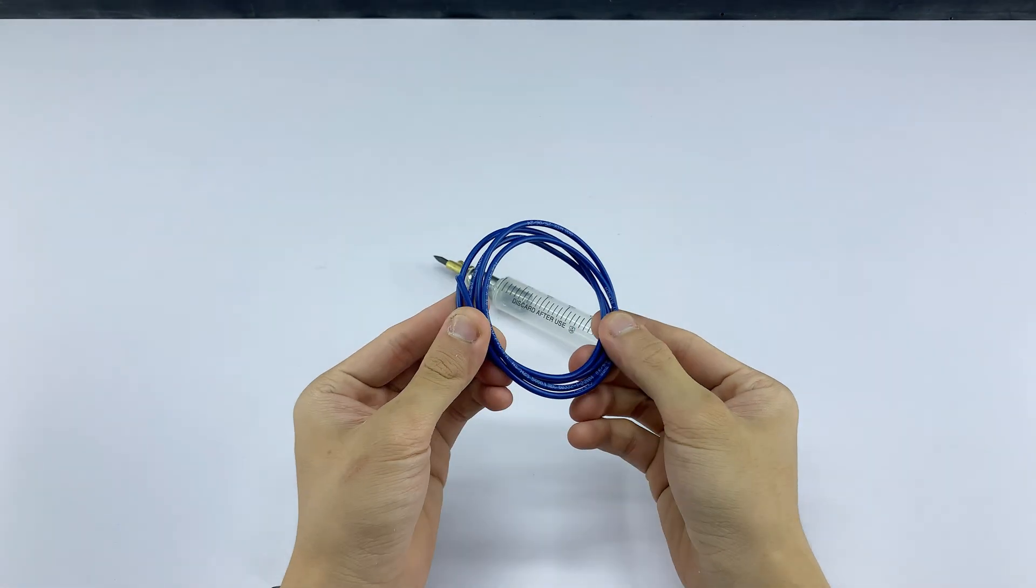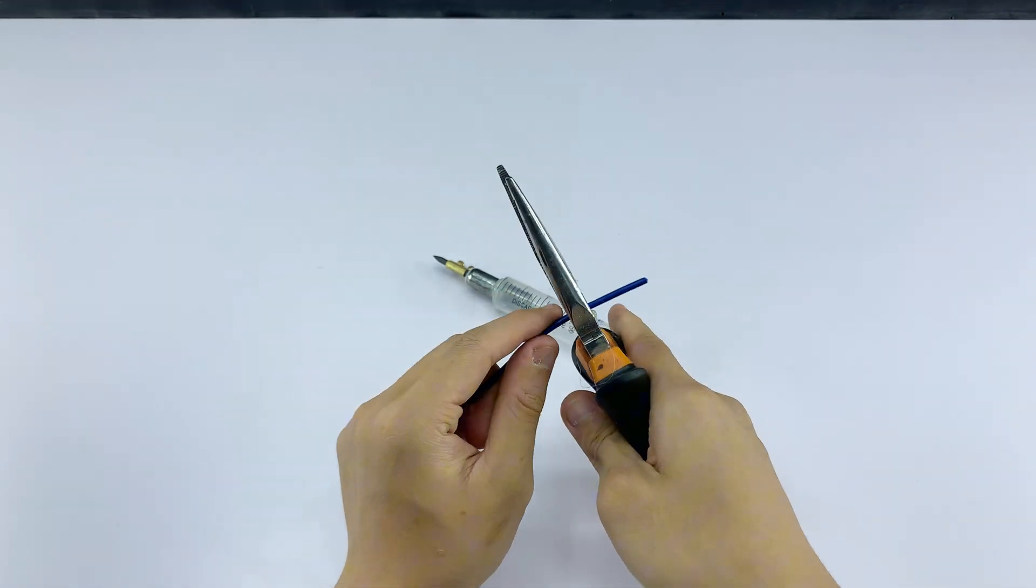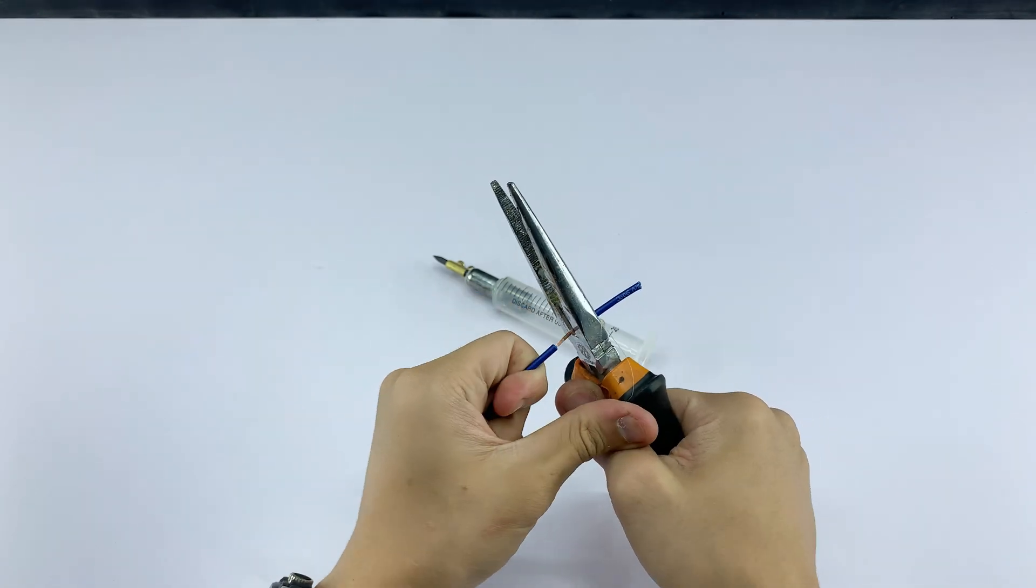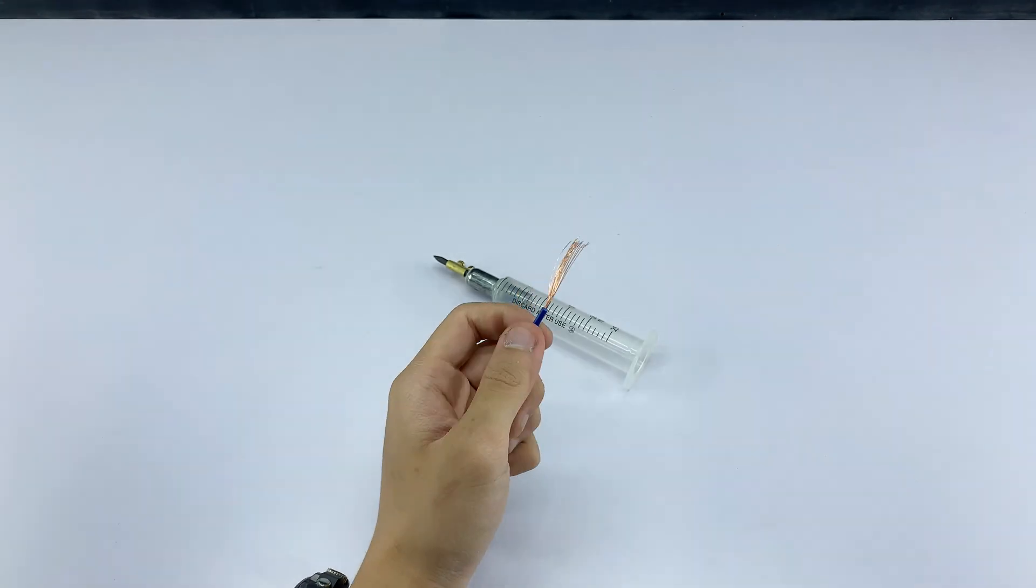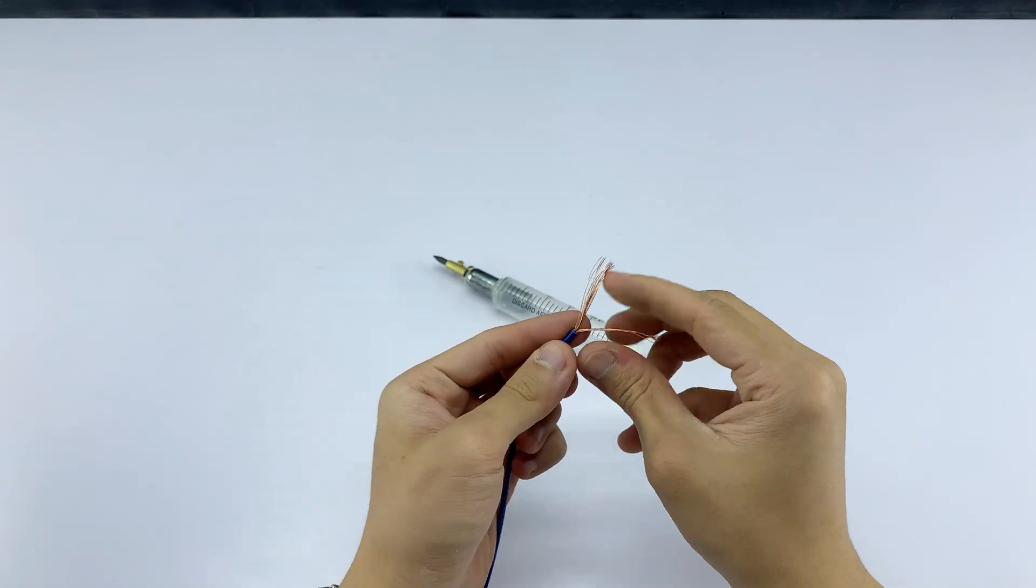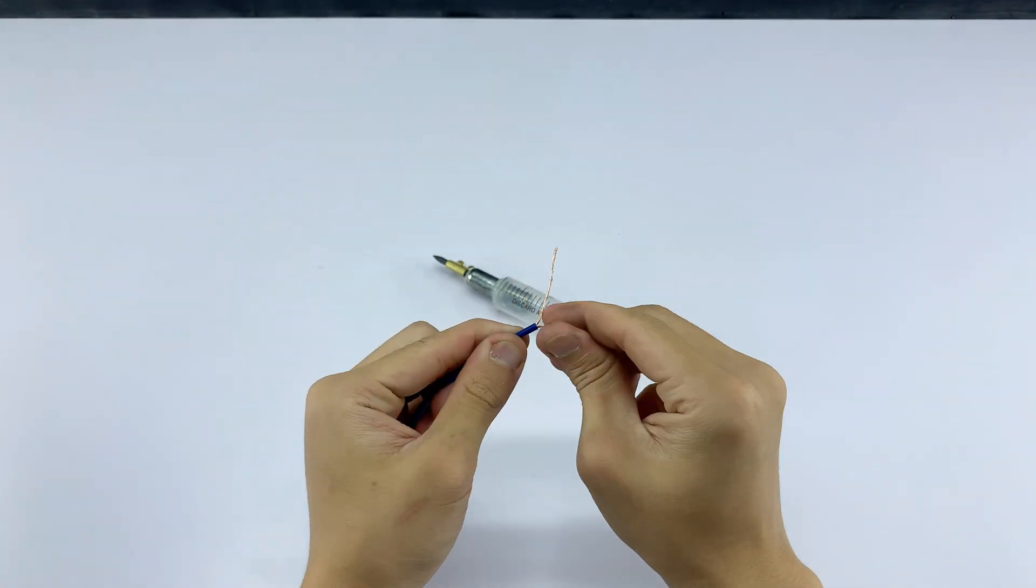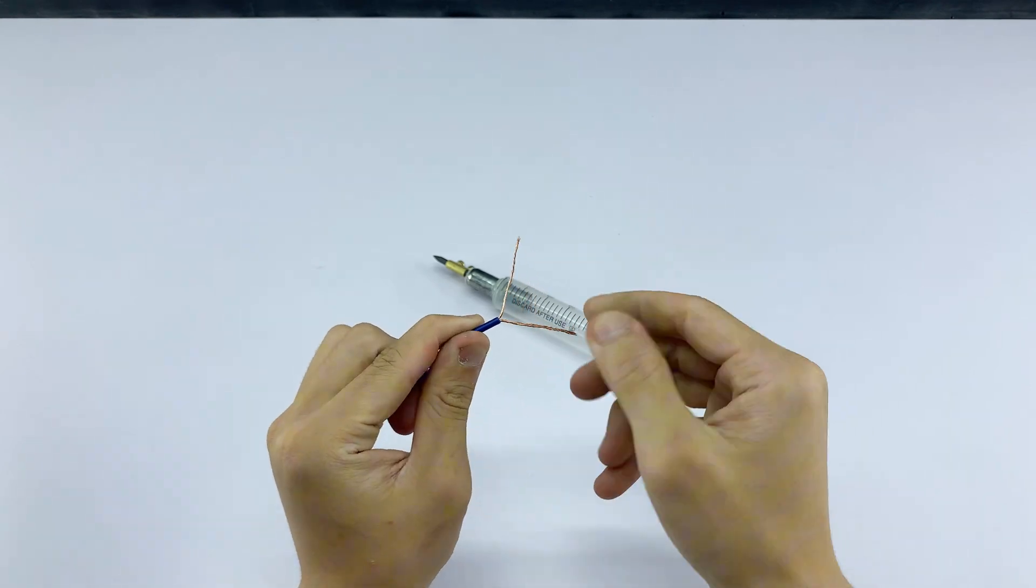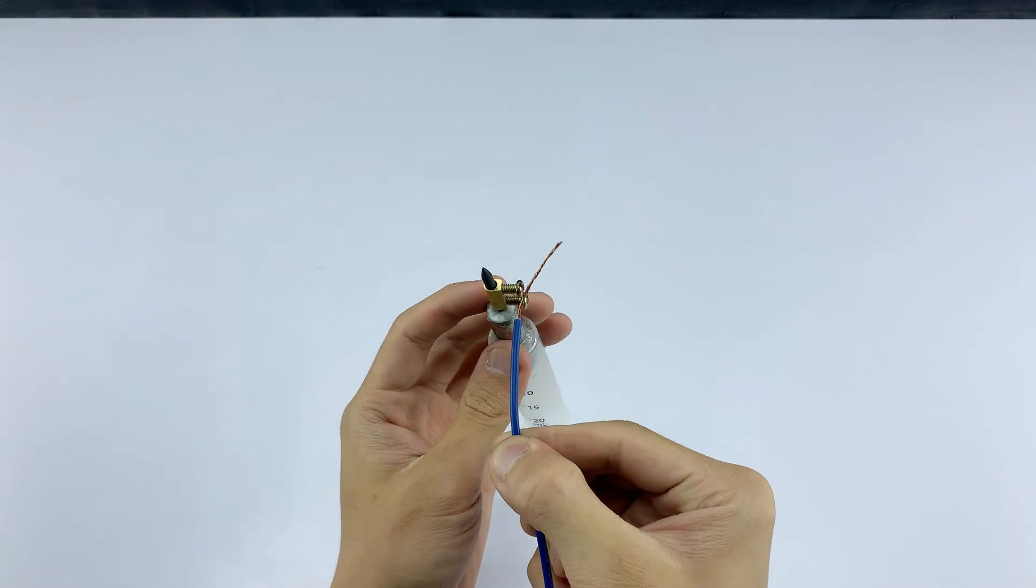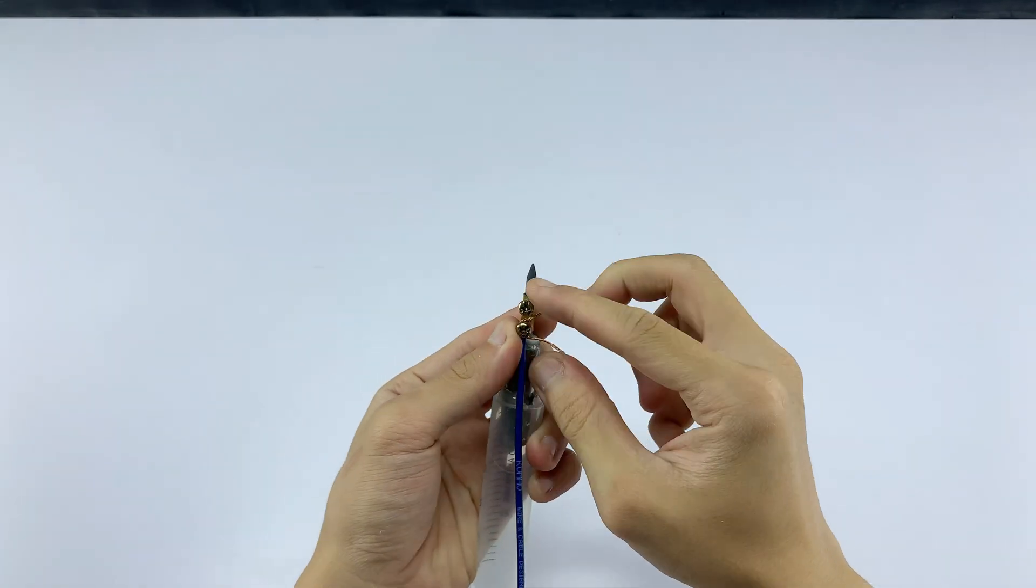I'm taking a blue electrical wire and stripping off a portion of its insulation. Then, I twisted the individual copper strands to keep them neat. I insert one end of the stripped wire into brass joints and twist it tightly around the existing metal contacts to ensure a good connection.